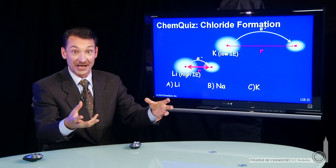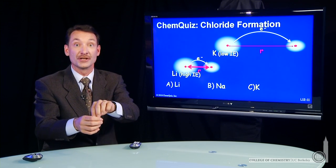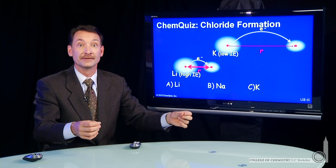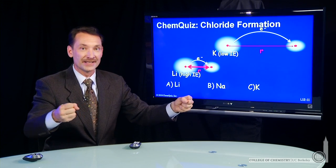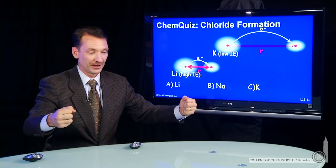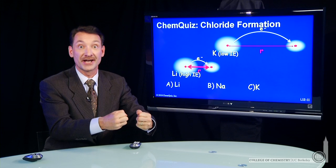but it takes a bunch of energy to transfer that electron from the potassium, sodium, or lithium over to the chlorine. So the question is, how do I balance that distance? The closer the distance, the stronger the bond, so I get more and more energy released the closer I get.